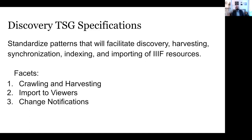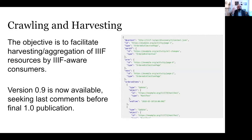We have something called the technical specification group, or TSG. There's a discovery TSG working on exactly this question and working on specifications that can make solving these problems a little bit easier. They're looking at things like crawling and harvesting and import to viewers. Crawling and harvesting is actually pretty straightforward — it's a relatively simple but standardized way of making changes, updates, and new publications of manifests available to something like an aggregator presenting materials around a particular domain or region. This is currently in a pretty stable place at version 0.9 and just seeking some last comments and implementations before a final push to 1.0.